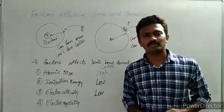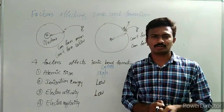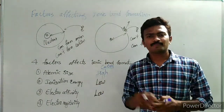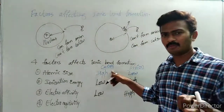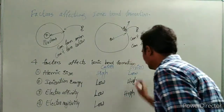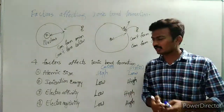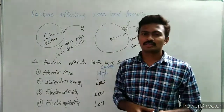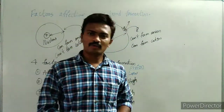Next, electronegativity — the tendency to gain the bonded electrons. The same affection towards electrons applies here. More electronegativity means more chances for anion formation. So, cation will be formed in the case of atoms with low electronegativity, while for anion formation, electronegativity should be high. These are the four factors which affect the formation of cation or anion, and these are the same factors which affect ionic bond formation.